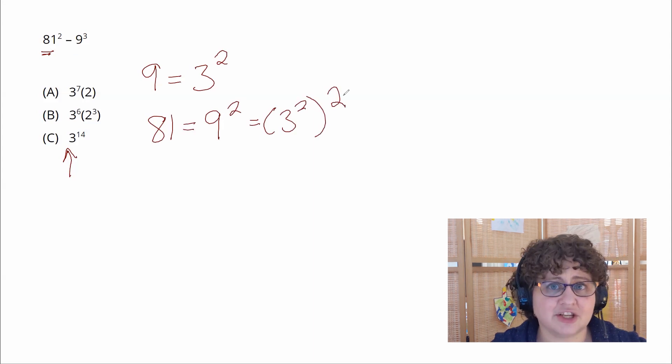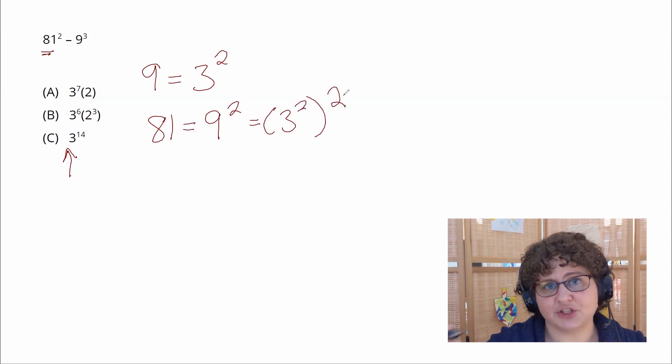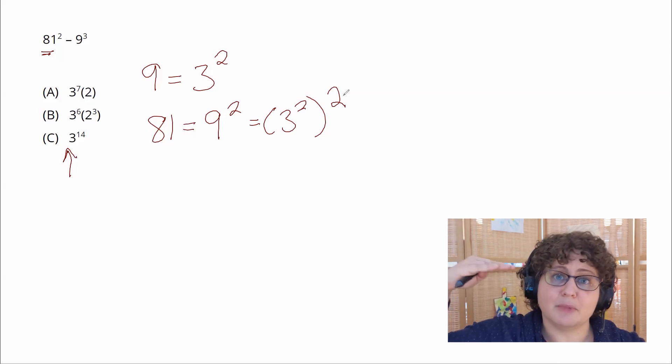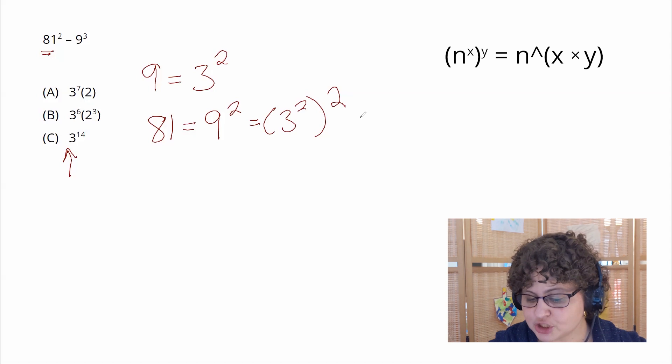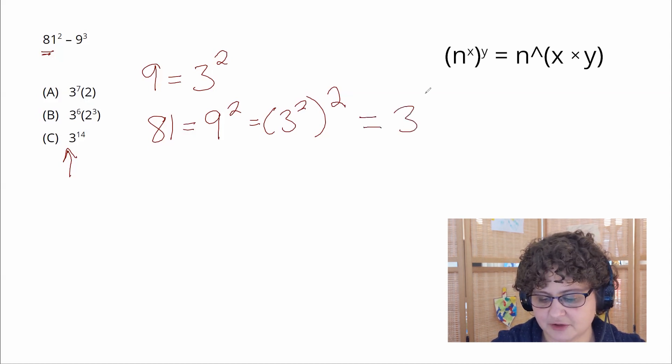Now if you studied your exponent rules, what you can do to simplify this further, whenever you see one exponent raised to another exponent, you actually multiply those two terms together. So this 3 squared squared term is going to become 3 to the fourth.